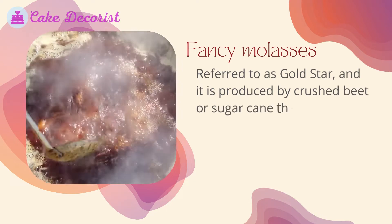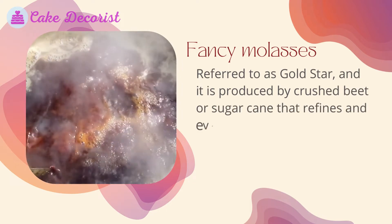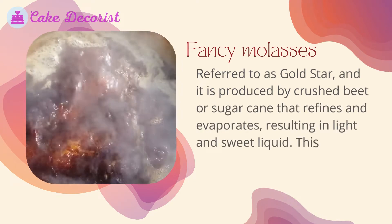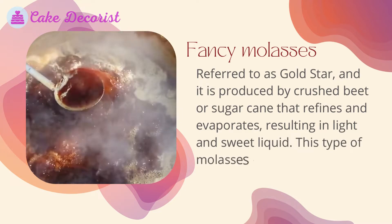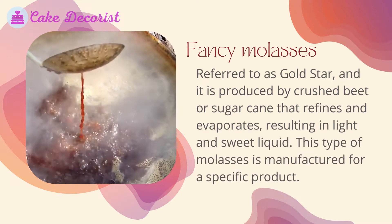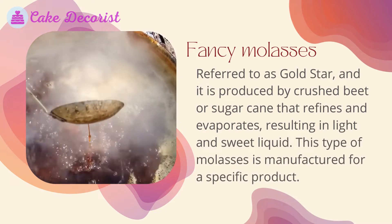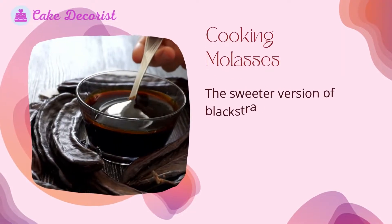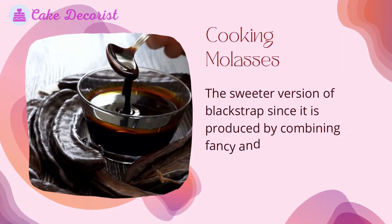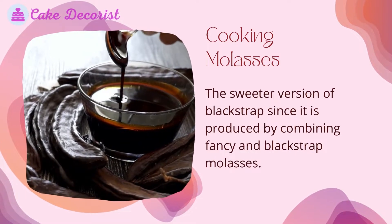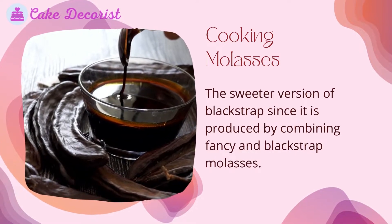Fancy molasses, referred to as gold star, is produced by crushed beet or sugar cane that is refined and evaporated, resulting in a light and sweet liquid. This type is manufactured for specific products. Cooking molasses is the sweeter version of blackstrap, produced by combining fancy and blackstrap molasses.